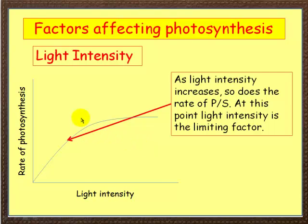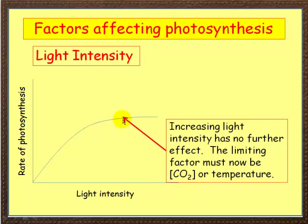Lastly, let's look at light intensity. Same sort of graph: rate of photosynthesis on the y-axis, light intensity on the x-axis. As light intensity increases, so does the rate of photosynthesis. At this part of the graph, light intensity is the limiting factor. But once it reaches a certain point, no matter how much you increase light intensity, it has no further effect on photosynthesis. So the limiting factor must now be either carbon dioxide concentration or temperature.